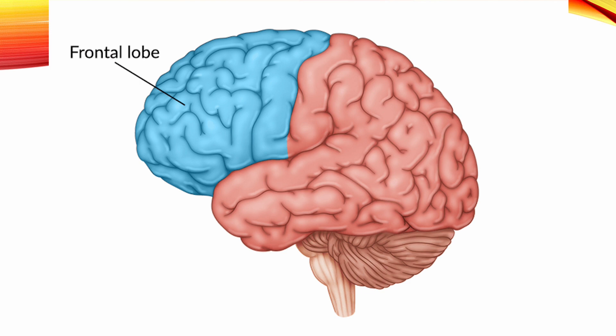The frontal lobe. This lobe extends from the front pole of the brain to the central sulcus, the precentral gyrus, the superior, middle, and inferior frontal gyri, and the sulci between them.